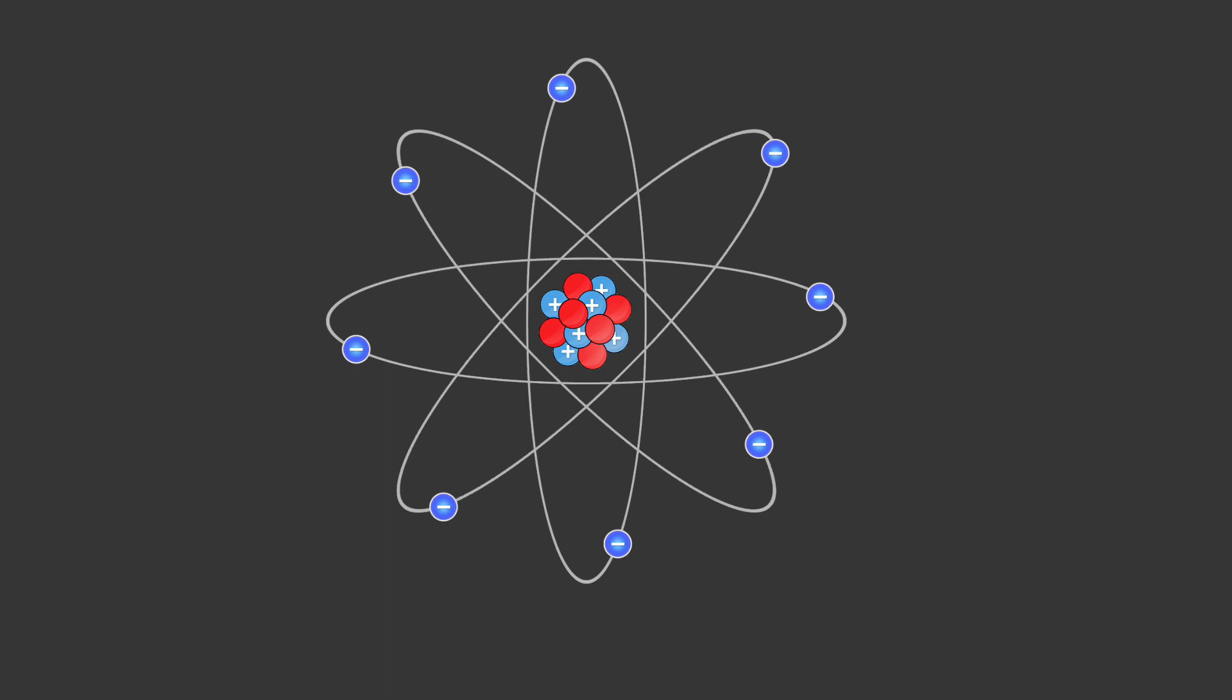Summary. Nucleus: the central core of an atom containing protons and neutrons. Electrons: negatively charged particles orbiting the nucleus in electron shells. Protons: positively charged particles found in the nucleus of an atom.